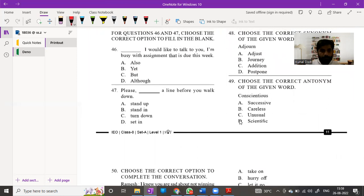Let's quickly look at question number 47. Please dash in a line before you walk down. Now let's go for elimination. Stand up - when we are walking in a line we are already standing up, so is this a relevant option? No, this is not. Turn down - turn down, I don't know, makes no sense here. Set in - okay, so set in can be an option, but do we say set in a line? No, we say stand in a line, so this is our correct option.